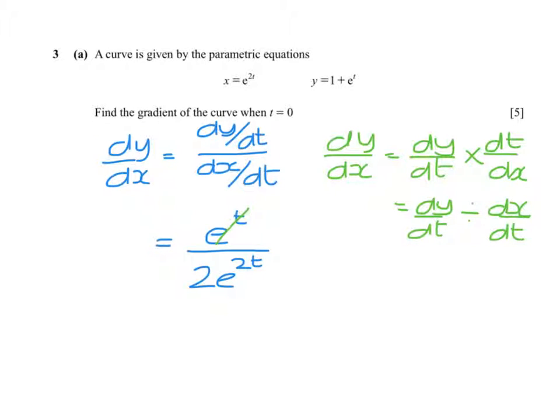And we notice that the e to the t cancels with the square, and we're asked to find the gradient when t equals 0, so m would equal 1 over 2 times e to the power 0, which is 1 half.